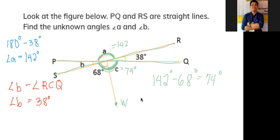So when you add 68 and 74 degrees, you'll get 142 degrees, which is the same as its opposite vertical angle, angle a, which is also 142 degrees.